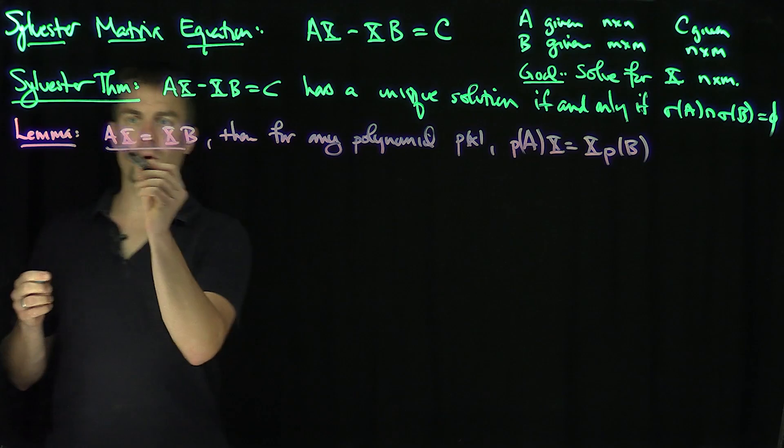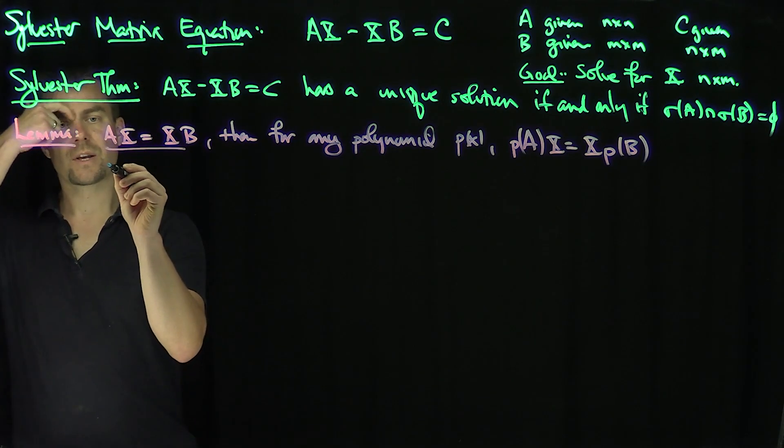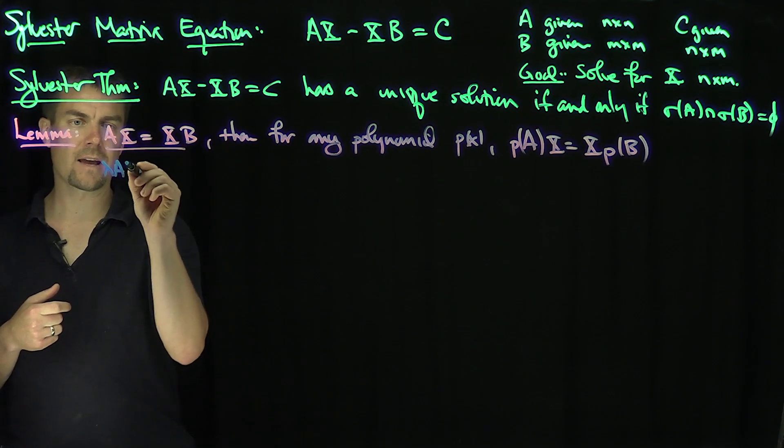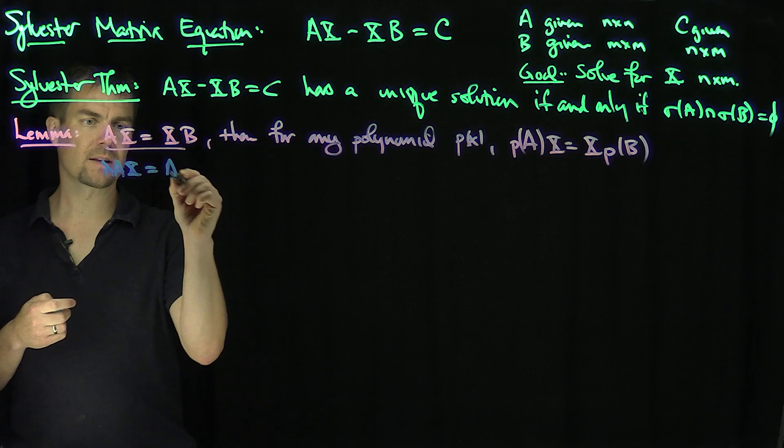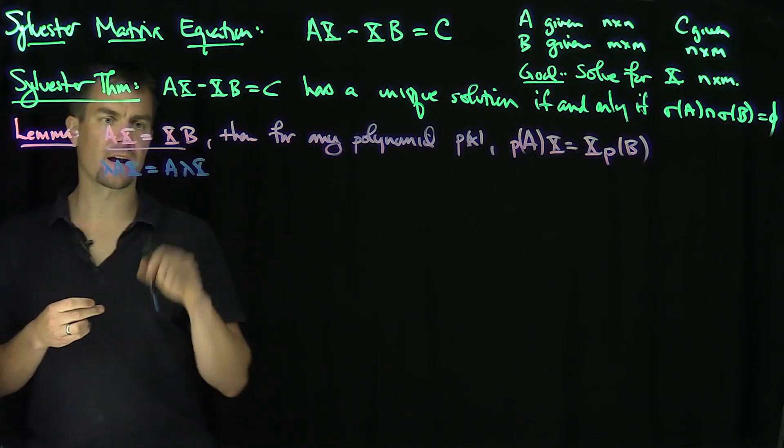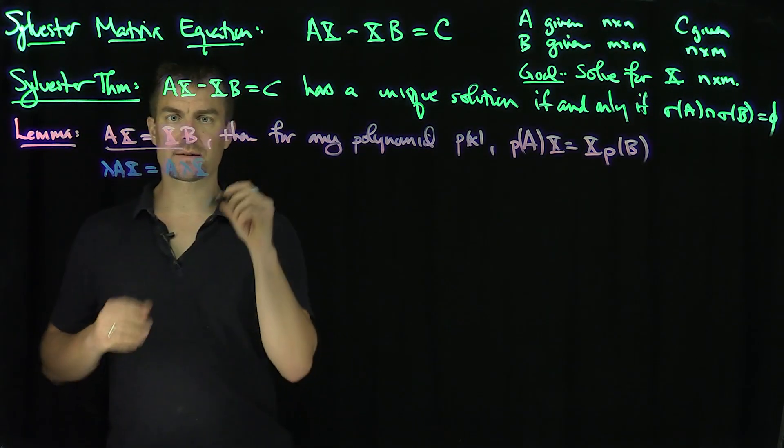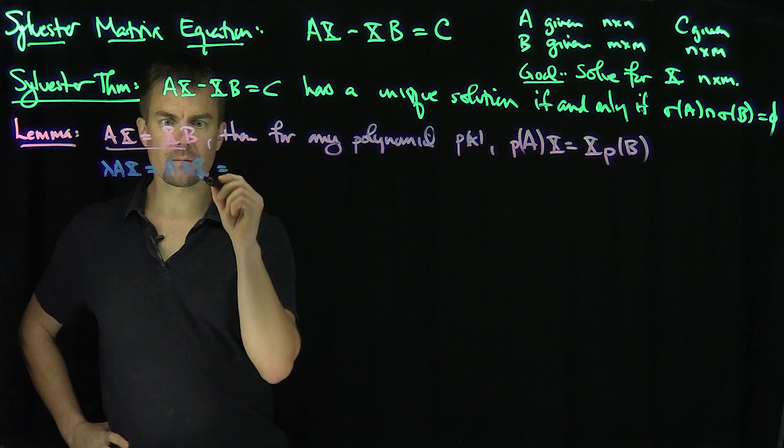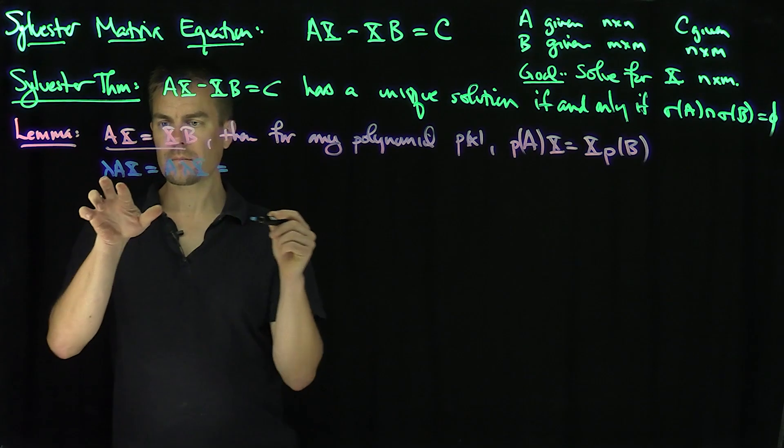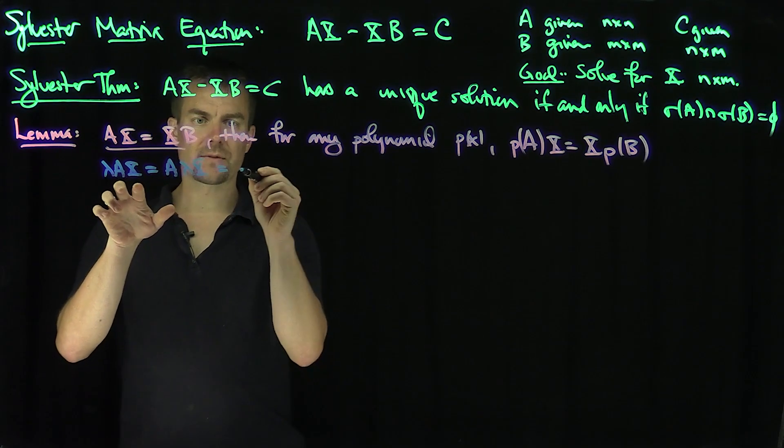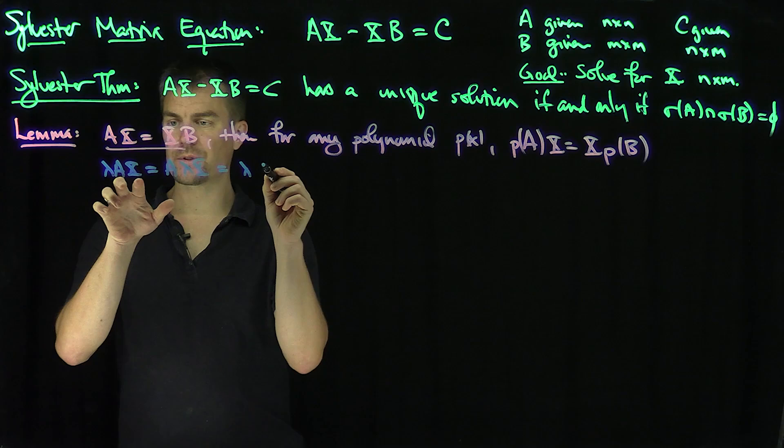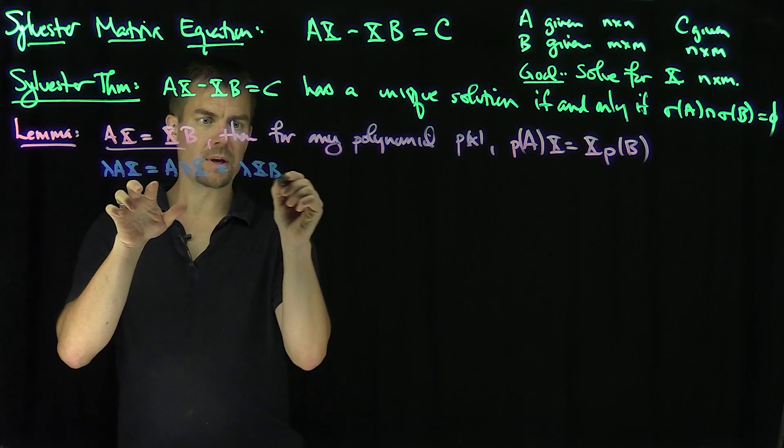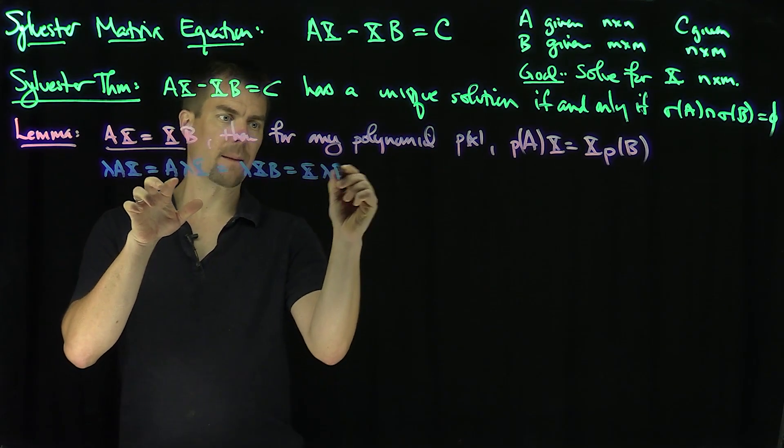Well, clearly it's true if I can multiply by any constant. So in other words, if I had lambda AX, that's the same thing as A lambda X. And that's the same thing as lambda AX, and that's of course equal to lambda XB, which is X lambda B.